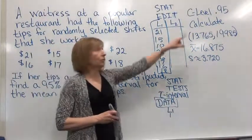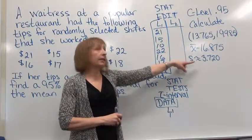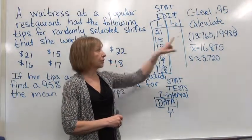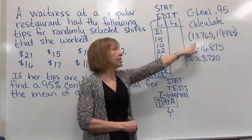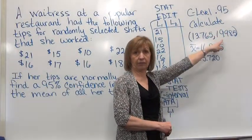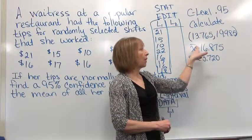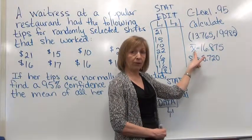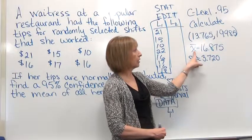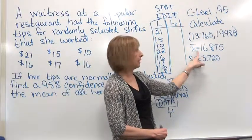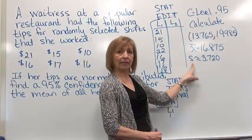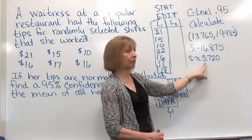So these values are actually information that we have about the problem that you're doing. The parenthesis is your low end to your high end of the interval notation for your confidence interval. Your X bar is the mean of the sample. And remember the mean of the sample is the point estimate for your population mean. So our point estimate for mu is our 16.875. And then S is the sample standard deviation from the data, the 3.720.